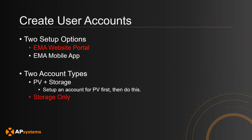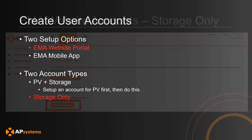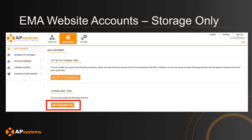Now let's look at the EMA website for a storage-only solution. This is also quite straightforward. Simply go to the Registration button, hit Add Customer, and Add Storage Only User. You then go through the rest of the pages to enter system information, which will include the ECU ID of the PCS.